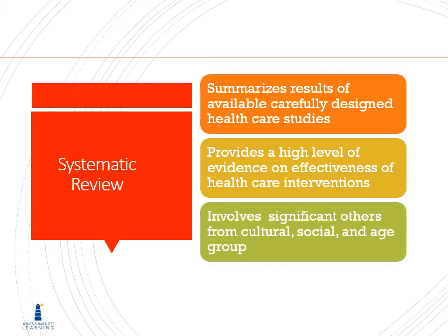There is a system called the Cochrane Collaboration — the Cochrane Database of Systematic Reviews, on page 203 — that summarizes the results of available, carefully designed healthcare studies. No matter who you are, whether you have access to a university library or not, you have access to health information. It provides a high level of evidence on effectiveness of healthcare interventions and involves significant others from cultural, social, and age groups across more than 130 countries.